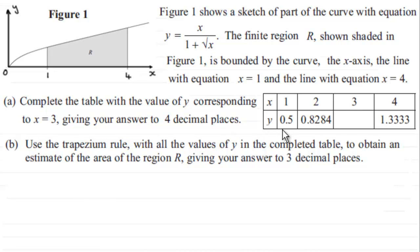What we've got to do is in part (a), complete the table of y values corresponding to x = 3 and give our answer to four decimal places. Then in part (b), use the trapezium rule with all the values of y in the completed table to obtain an estimate for the area of the region R, giving our answer this time to three decimal places.